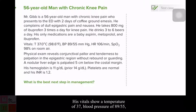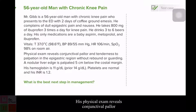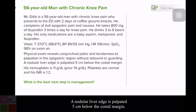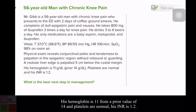His vitals show a temperature of 37, blood pressure 89 over 55, heart rate 106, and oxygen saturation 98% on room air. His physical exam reveals conjunctival pallor and tenderness to palpation in the epigastric region without rebound or guarding. A nodular liver edge is palpated five centimeters below the costal margin. His hemoglobin is 11 from a prior value of 14, platelets are normal, and his INR is 1.2.